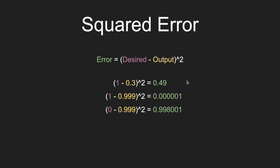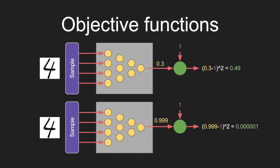Now that we've talked about various objective functions, we can revise our picture and add a little green thing representing our objective function. We take the output of the network and the desired output, and that produces something that measures how poorly the network is doing — it outputs the error. So we really just want to minimize the output of this green thing; we want to make the error as low as possible when we're training the network.